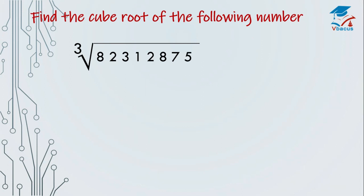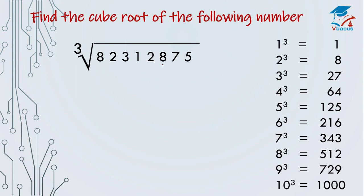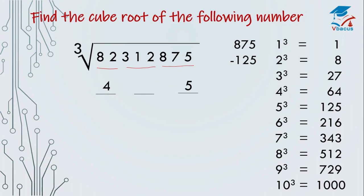Let us go to the next sum. Find the cube root of 82312875. Again, chart is here. Split it into 3 parts. The answer will be in 3 digits. See the unit place — where is 5? 5 is here, so cube root of 125 is 5; 5 will come at the unit place. And select the hundreds digit — where does 82 fall? 82 falls in between 64 and 125, so choose the lower number: cube root of 64 is 4. 4 will come at the hundreds place. Now we have to calculate the middle digit. Subtract cube of 5, that is 125, from 875 — that is 750.